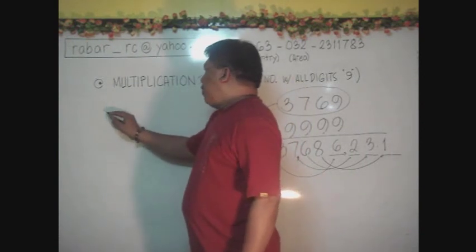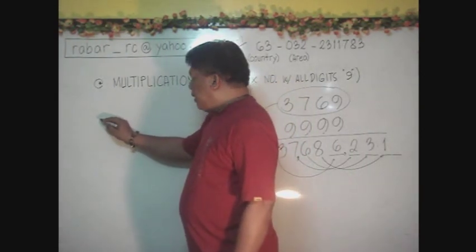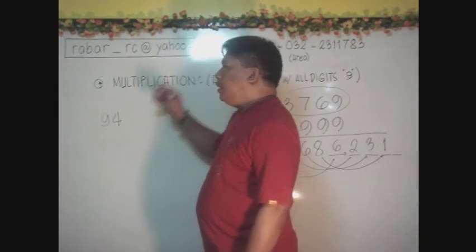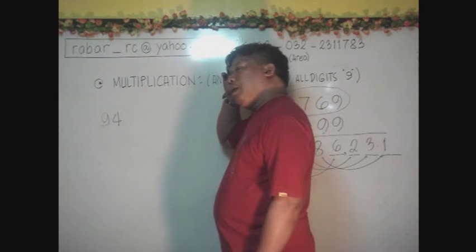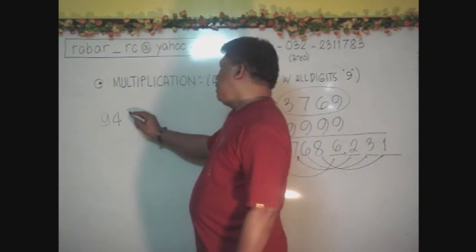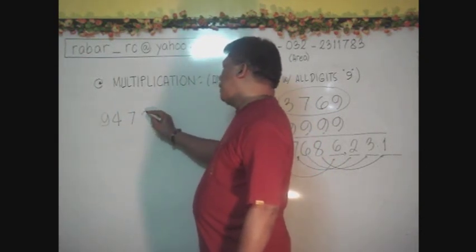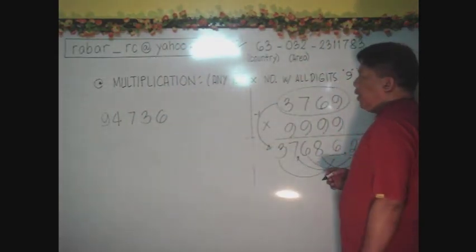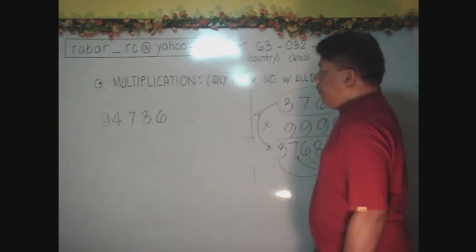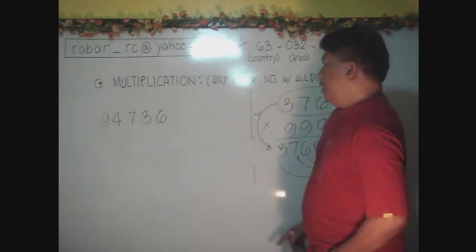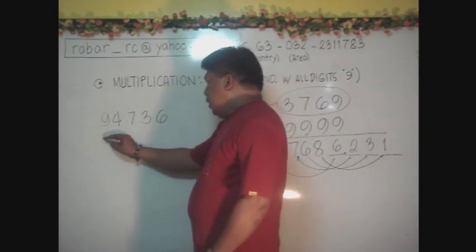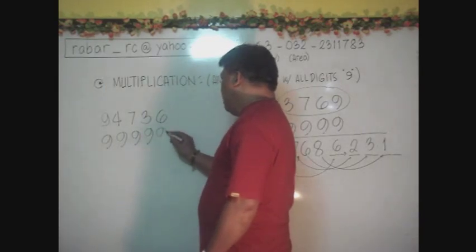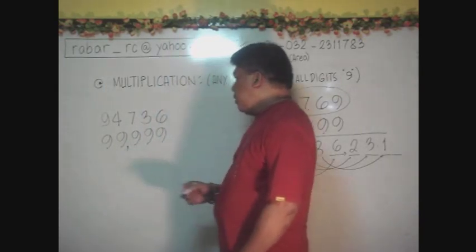Like 974,36 or 97,436. Let us say 7,736. Let us say 94,736. And that is supposed to be 5 digits number already. Then, again, multiply this with a very big number. 99,999.